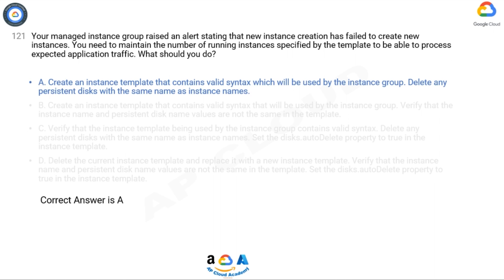Second, delete any persistent disks with the same name as instance names. The error suggests that there might be persistent disks with the same name as the instance names. This can cause conflicts and prevent new instances from being created. By deleting any persistent disks that have the same name as instance names, you resolve the conflict and allow new instances to be created without any issues.